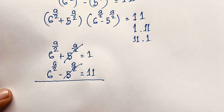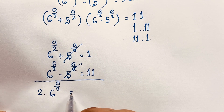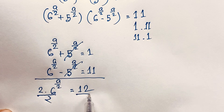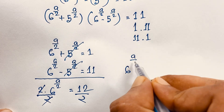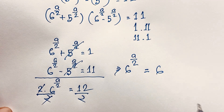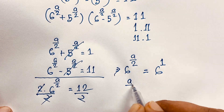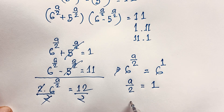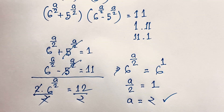If I add both equations, the 5 to the power (a over 2) terms cancel out because one is plus and one is minus. We get 2 times 6 to the power (a over 2) equals 1 plus 11, which is 12. Dividing both sides by 2, we find 6 to the power (a over 2) equals 6. Since the base is the same, the exponents must be equal: a over 2 equals 1, so a equals 2. This is our final answer.